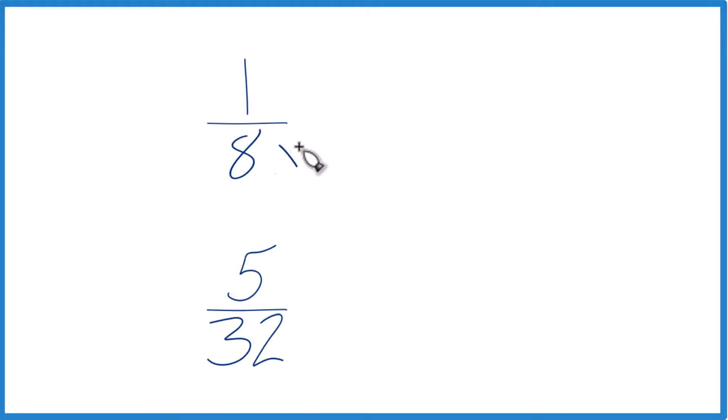So let's multiply 8 times 4, and that equals 32. So we have 32 here, this is already 32, let's just keep it 5 32nds here.